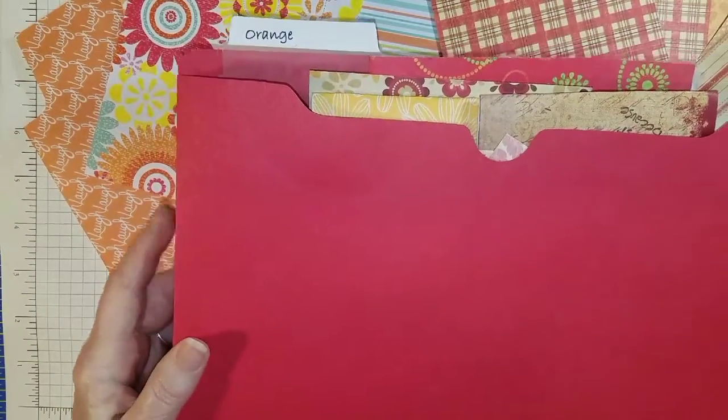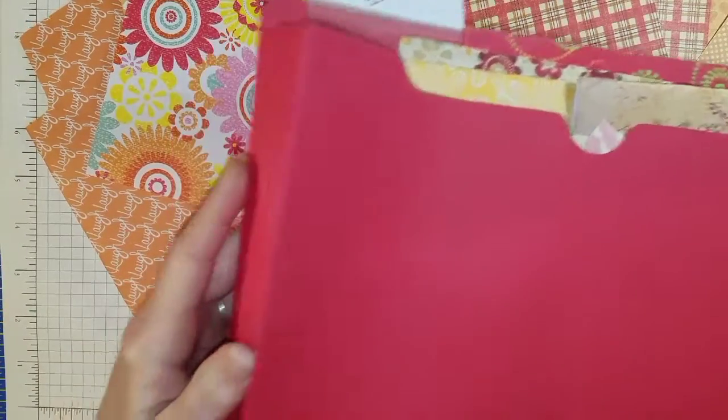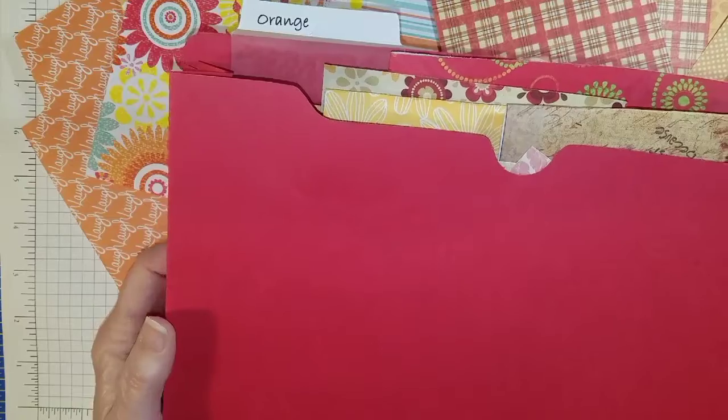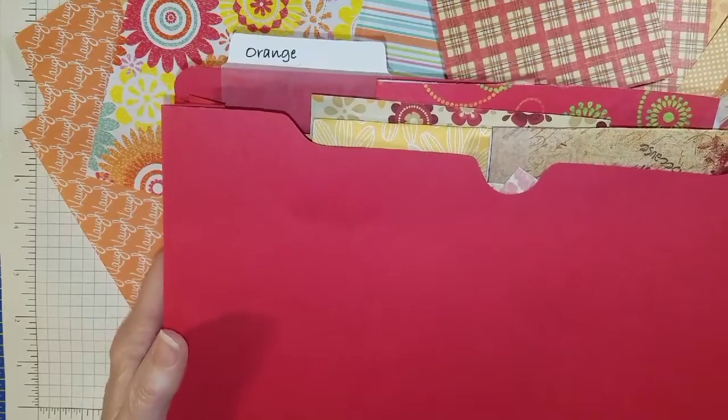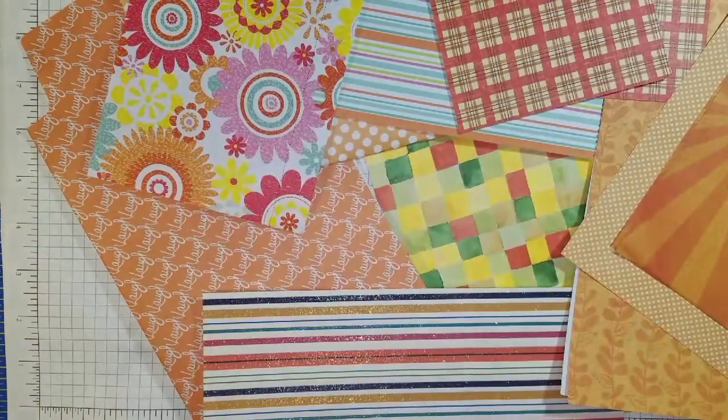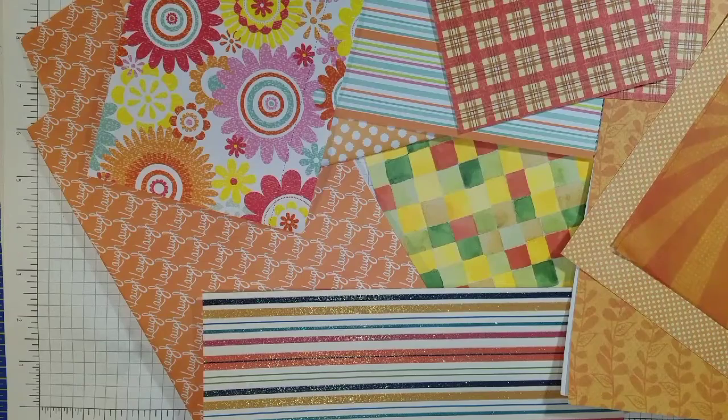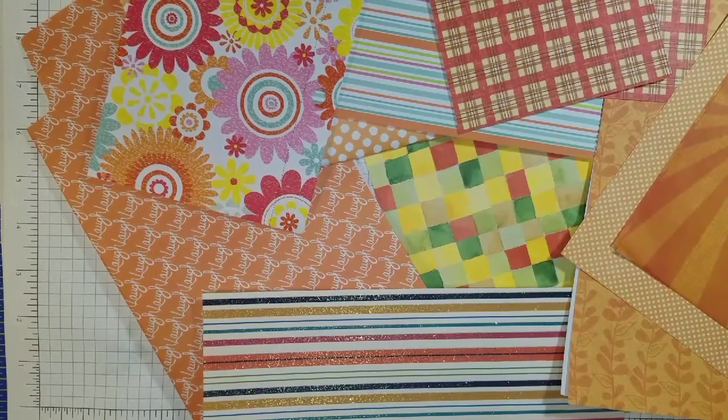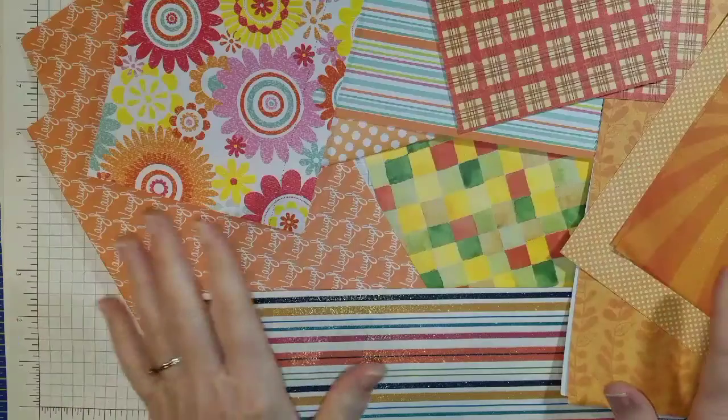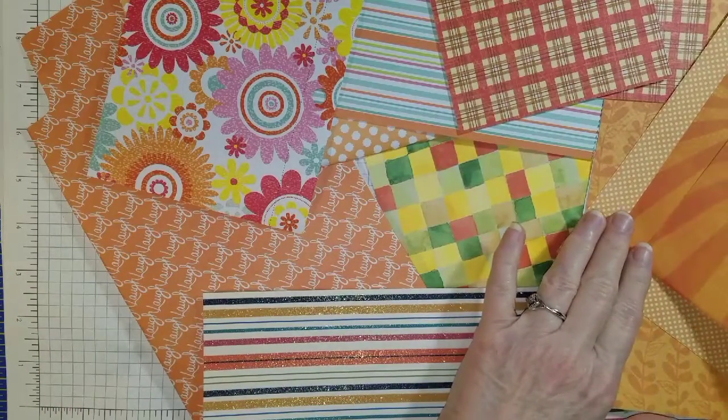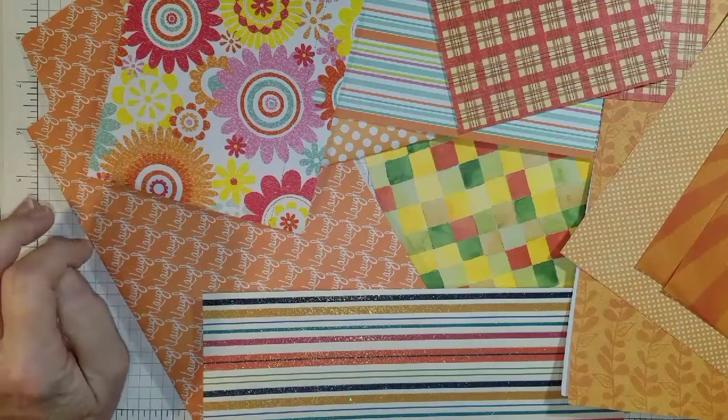I keep my paper scraps in these nice accordion files. This one is of course labeled orange, and some of my favorite papers were sticking out from the top, so I pulled them out because I love orange and I just decided that I was in an orange mood.